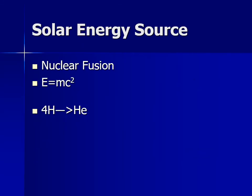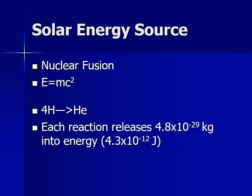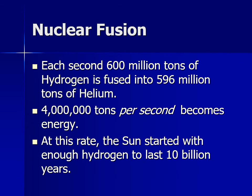E = mc² means four hydrogens become one helium, each reaction releasing a tiny bit of energy. But there are an enormous number of hydrogen atoms in the sun, so all told they release enough energy to keep the sun shining. Every second, 600 million tons of hydrogen fuses into 596 million tons of helium. That means every second, 4 million tons of mass ceases to exist as matter and becomes energy — more than enough for the sun to last 10 to 12 billion years.